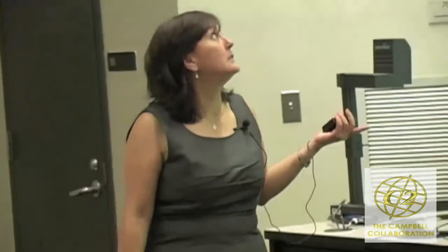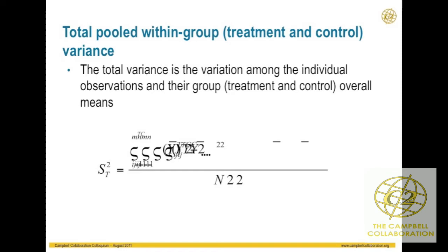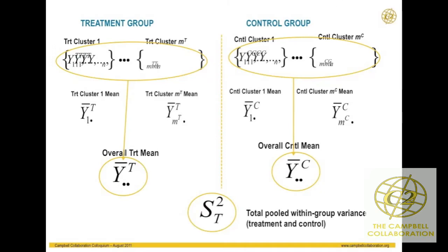Finally, we have our total pooled within-group variance — the total variance — which is each individual observation's deviation from its associated grand mean of their group. So we have three components: within clusters, between cluster means, and the total difference between individuals and their grand means.